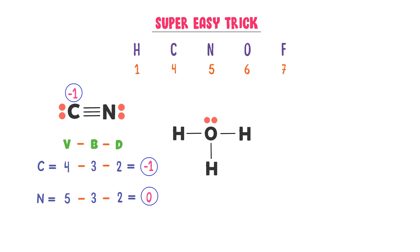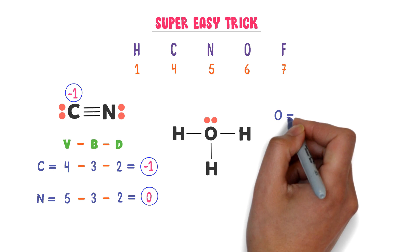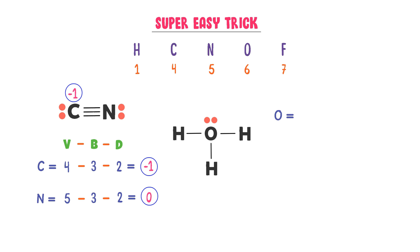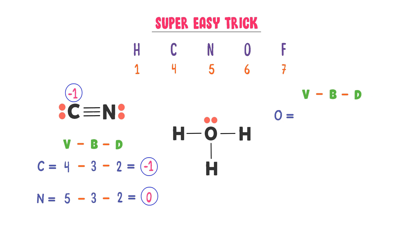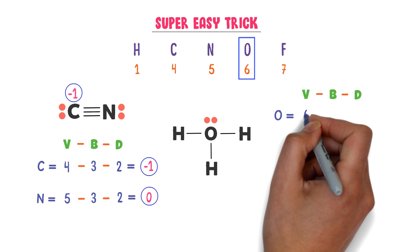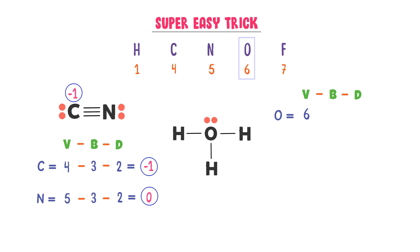Now consider this molecule of hydronium. Let me calculate the formal charge of the oxygen atom. We use the trick V-B-D. The valency of the oxygen atom is 6, minus this oxygen atom forms three bonds, minus there are two dots present on this oxygen atom.